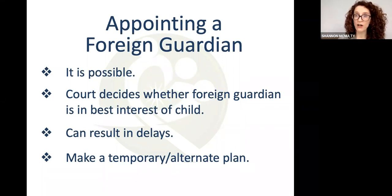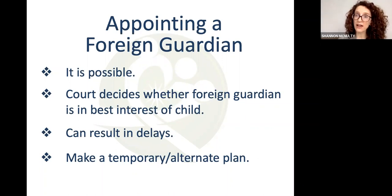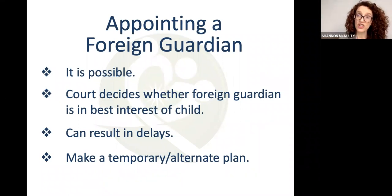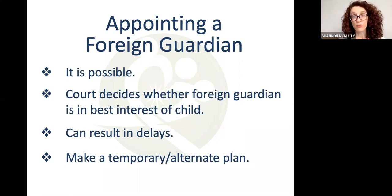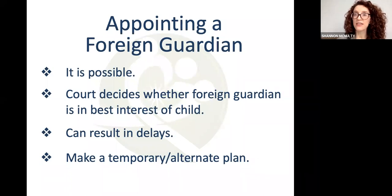It is possible for a U.S. court to appoint a foreign guardian, applying the same best-interest standard. But when we have a foreign guardian, there are other issues: the court doesn't have jurisdiction over this person, and once the guardian is appointed the court may lose jurisdiction over the child on an ongoing basis. So before appointing a foreign guardian, the court will require a report from Child Protective Services or an equivalent agency in the foreign country.